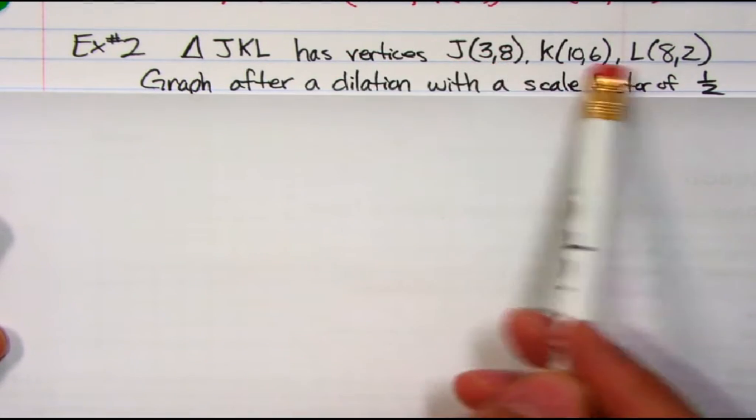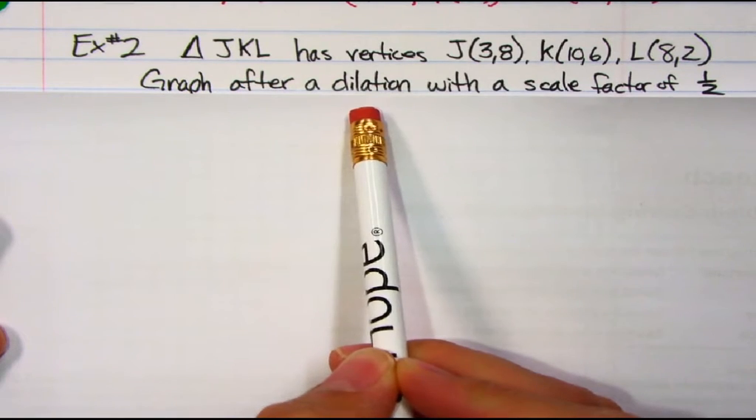This one I'm actually going to show you what it looks like. So triangle JKL has vertices J, K, and L, those coordinates there. I want to graph after a dilation with a scale factor of 1/2. 1/2, that's less than 1, that means it's going to be getting smaller or a reduction.